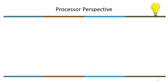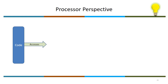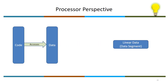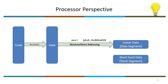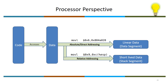The conclusion, from the processor's perspective: global data — linear data — is accessed through absolute addressing. Short-lived data, or data in the stack segment, is accessed using relative addressing. For example, ESP is used as the end of the stack frame. More on this in the next section. For global data, it is direct addressing — the address straight away.